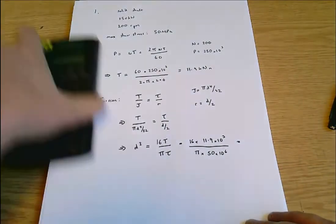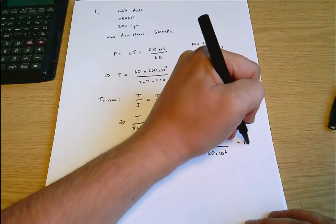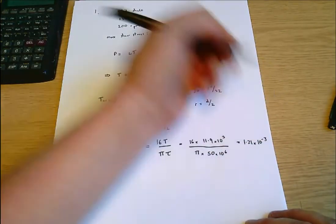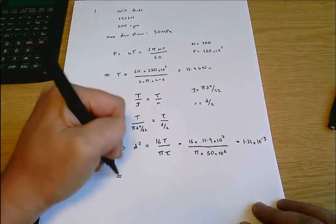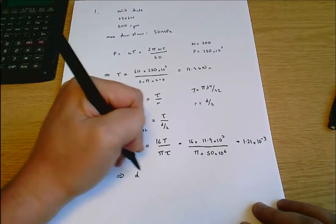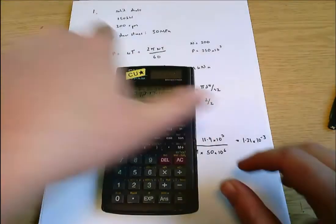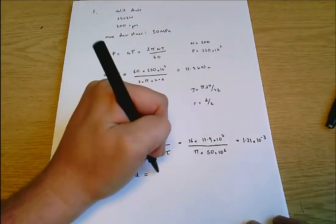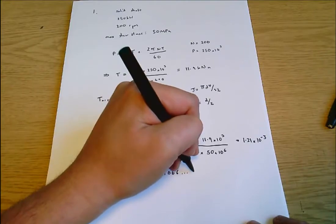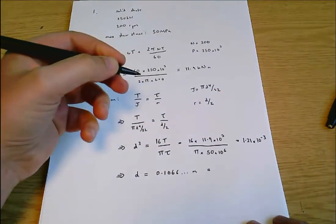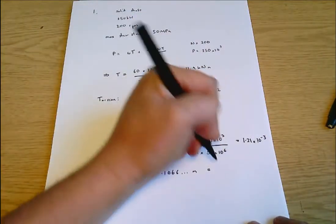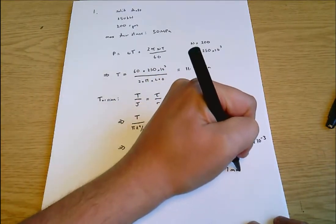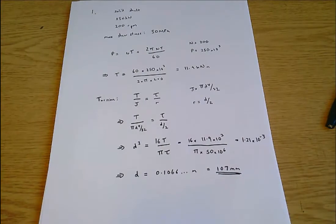1.21 times 10 to the minus 3, and that answer's in meters cubed. d equals the cube root of that which is 0.1066 meters, which is let's call that 107 millimeters. That is the shaft size that will give me this shear stress of 50 megapascals.